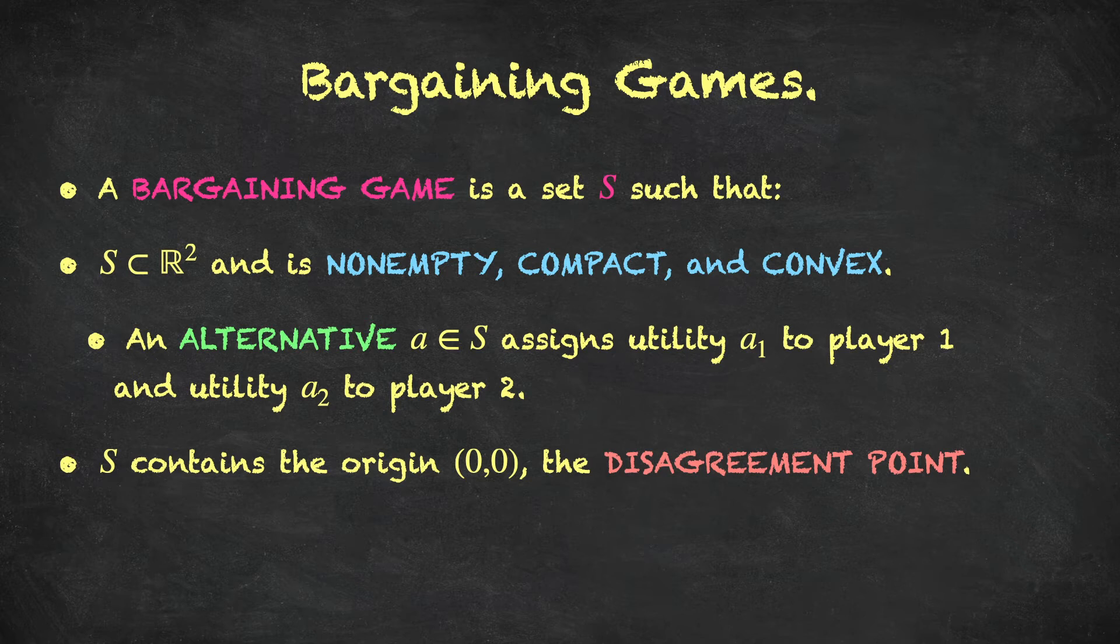We will call elements of the bargaining set S alternatives. So, a typical alternative could be an element lowercase a, which belongs to S. And remember that a has two dimensions in this setup today. So, the first coordinate, a1, is the amount of utility being assigned to player 1, and the second coordinate, a2, is the utility assigned to player 2. The final assumption we will make is that the set S, the bargaining game, contains the origin (0,0), which is the disagreement point. So, if bargaining breaks down for any reason, if the players cannot decide on anything better, this is the default disagreement point where they both receive utility 0.